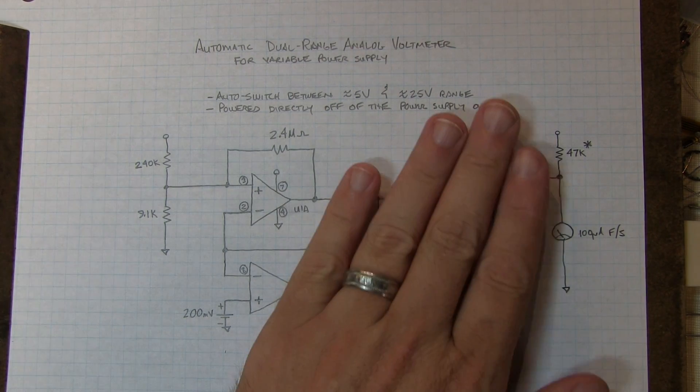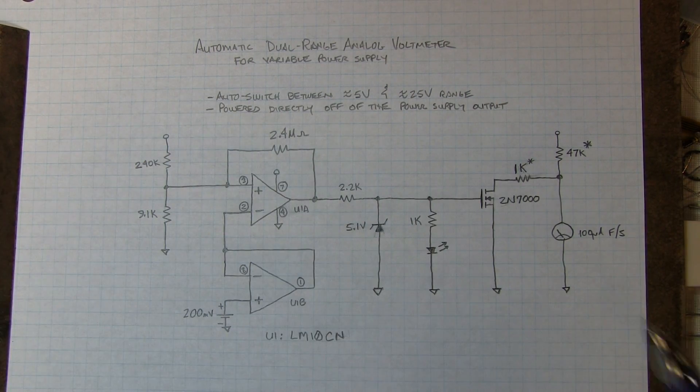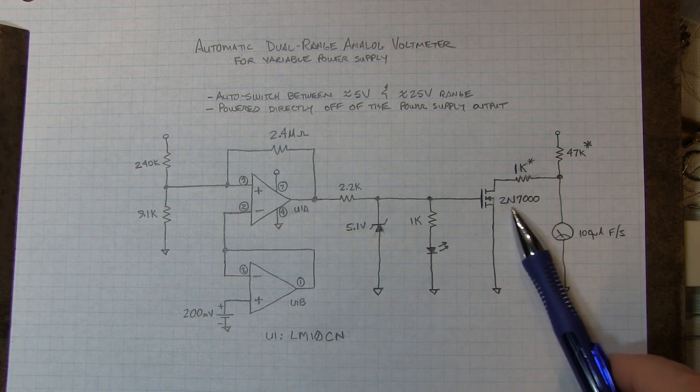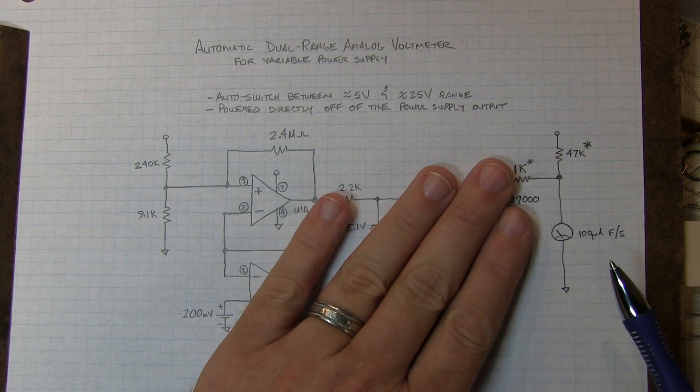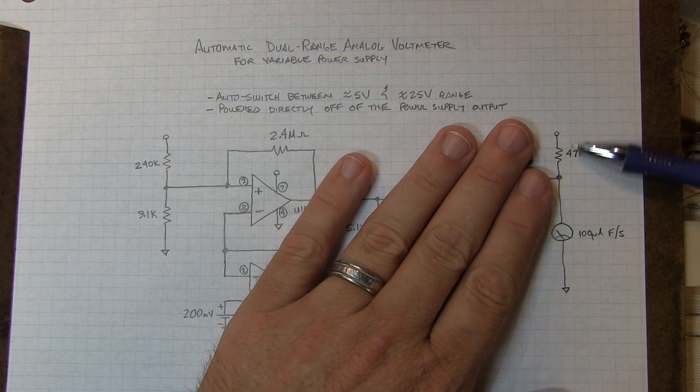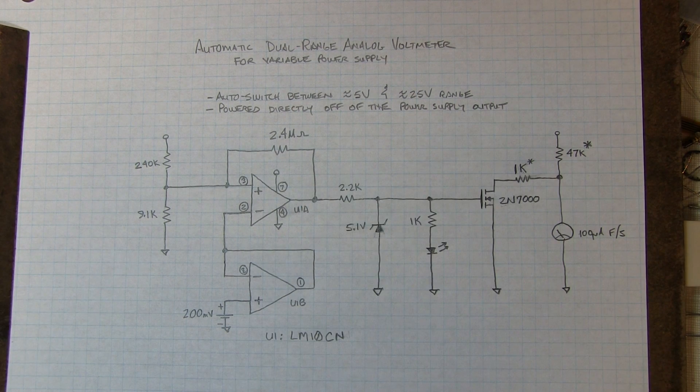So if you had this built into a power supply, you knew which range of the meter or which scale on the meter to read. So we're operating in the low range. Essentially, all of this is out of the circuit. Our 2N7000 FET or MOSFET is turned off. So that looks like a high impedance. So this is all essentially out of the circuit. And our meter simply consists of the current limiting resistor and the meter movement.